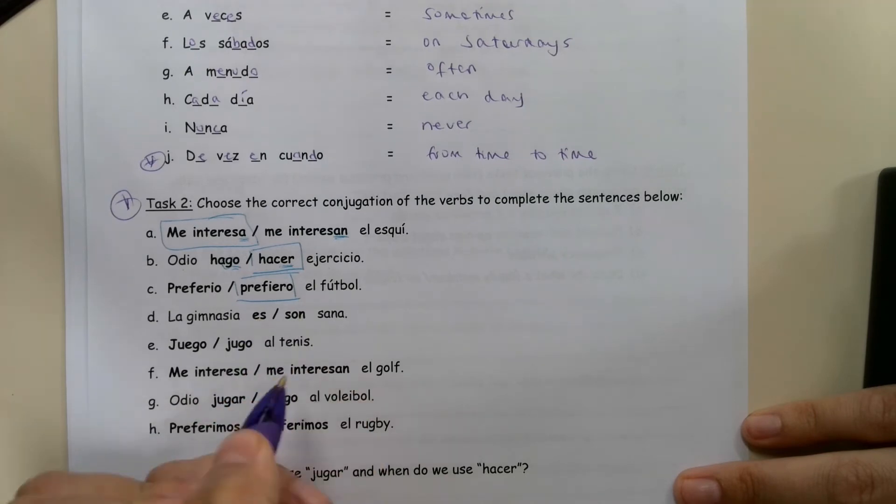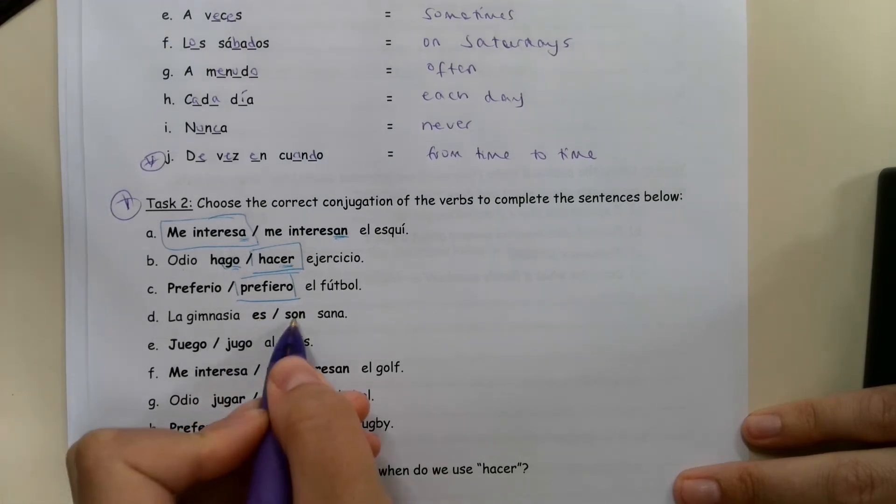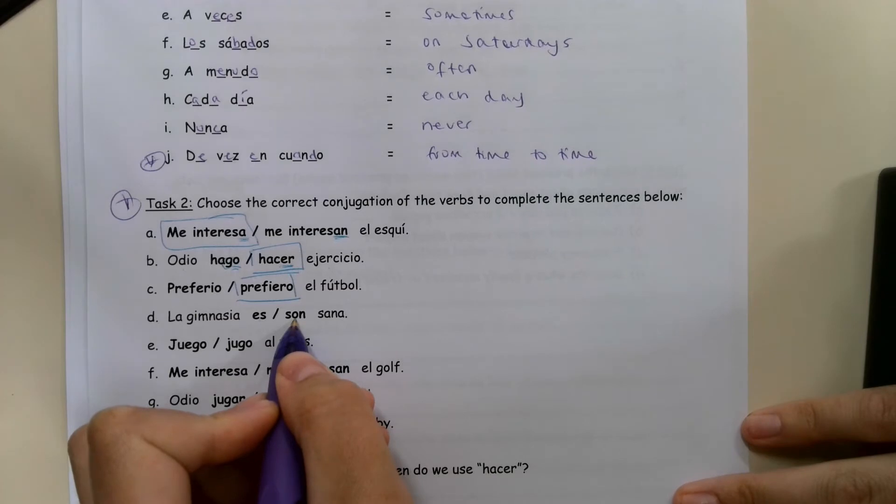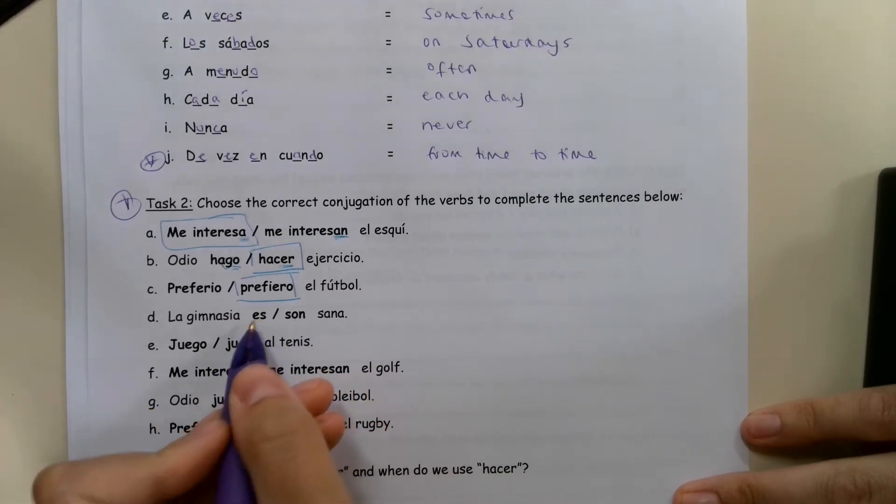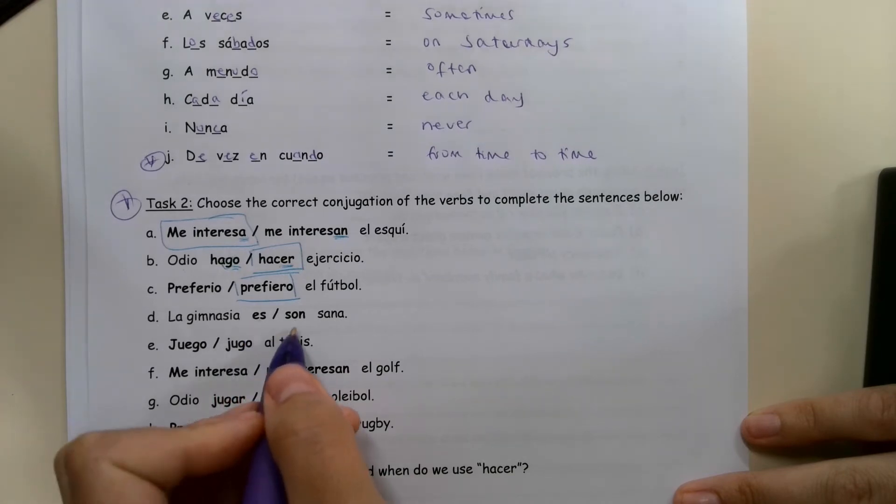Next one, es or son. Es means is, and son means are. Okay, so we would use es if we're talking about one thing, to say like, I don't know, Spanish is something. Or son, to say students are, if we're talking about more than one thing.